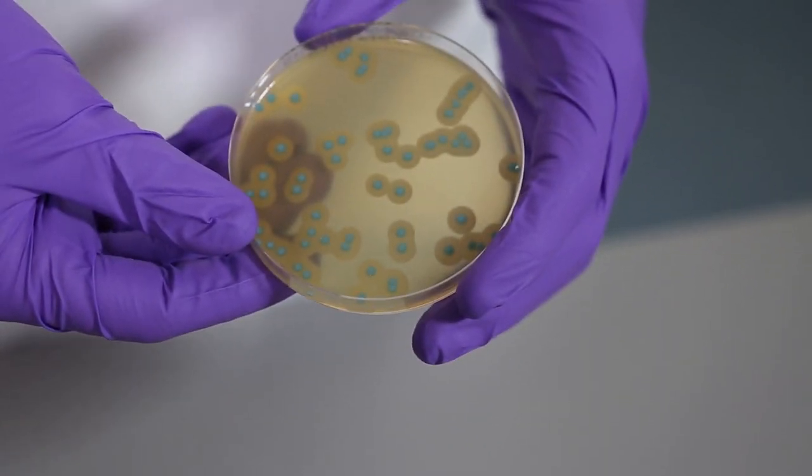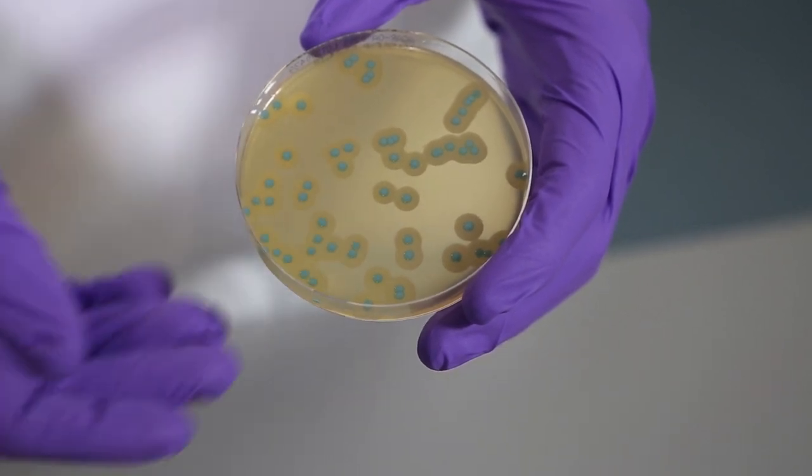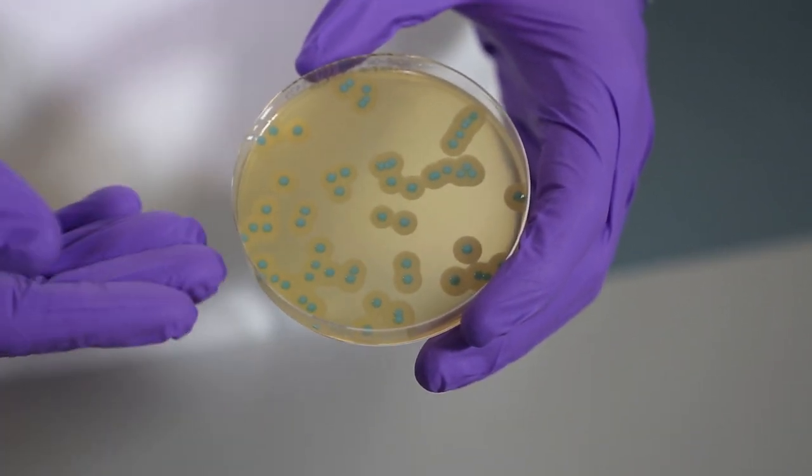This is what Listeria monocytogenes looks like on the agar when dried for around 10 minutes using a laminar flow. Here are healthy green colonies with large opaque halos.